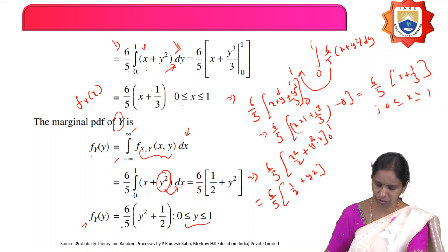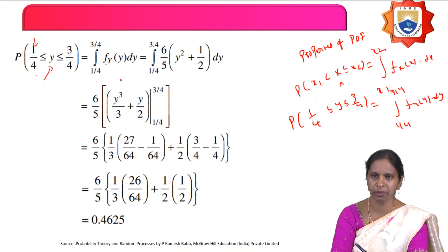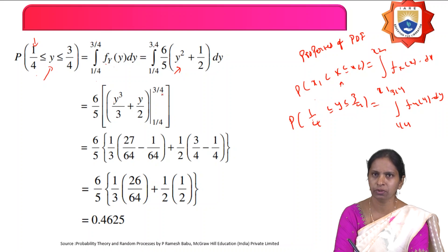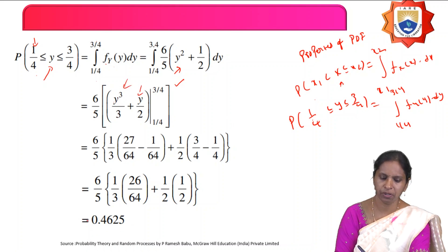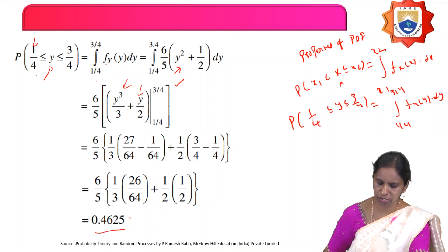Therefore, P(1/4 ≤ y ≤ 3/4) = (6/5) times the integral from 1/4 to 3/4 of (y² + 1/2) dy = (6/5) times [y³/3 + y/2] from 1/4 to 3/4. Substituting the upper and lower limits gives P(1/4 ≤ y ≤ 3/4) = 0.4625.